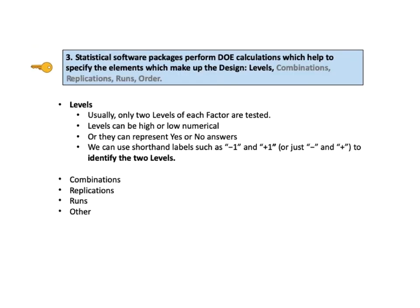KTU number 3 says: statistical software packages perform DOE calculations, which help to specify the elements which make up the design. These design elements are levels, combinations, replications, runs, and order. We'll deal with each of these individually, starting with levels.